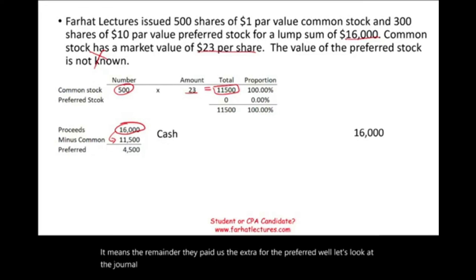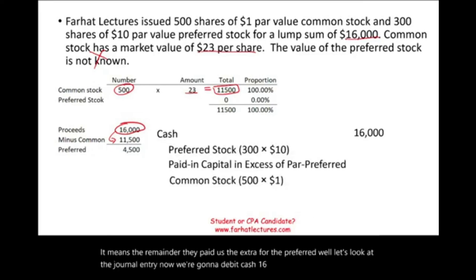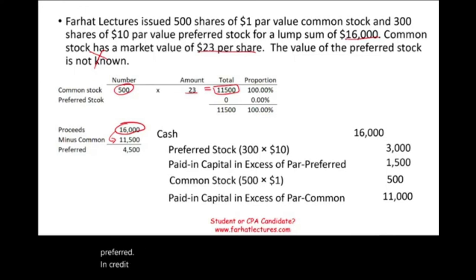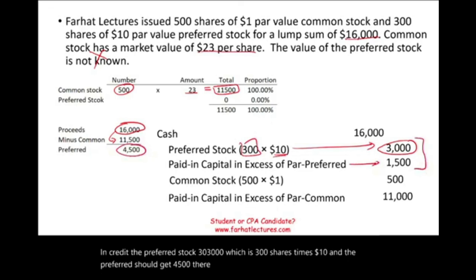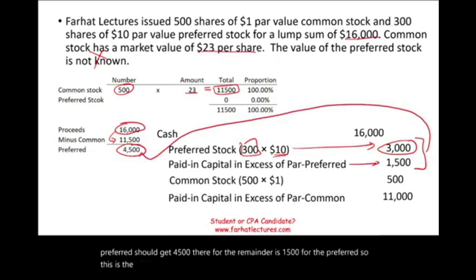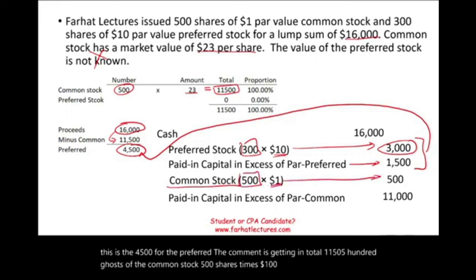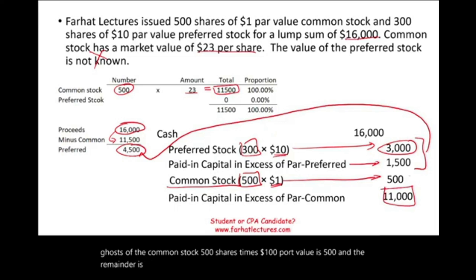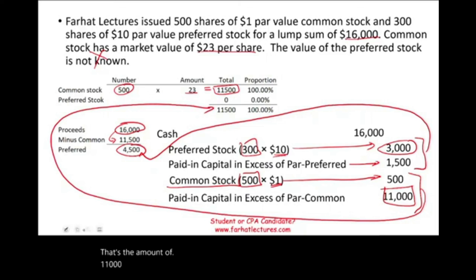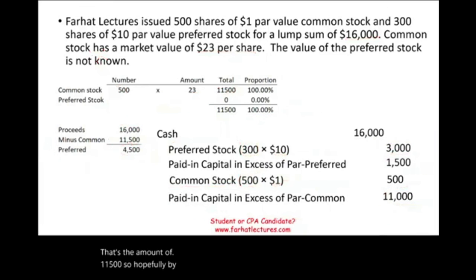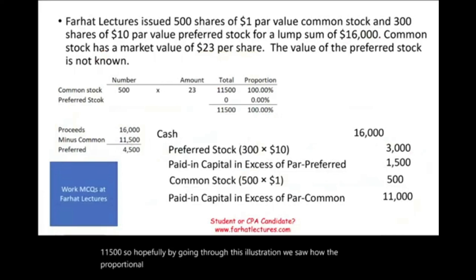Let's look at the journal entry. We debit cash $16,000. We credit preferred stock for 300 shares times $10 par value, which is $3,000. The preferred gets $4,500 in total, so the remainder — $1,500 — is additional paid-in capital for preferred. The common stock gets $11,500 in total: $500 goes to common stock (500 shares times $1 par value), and the remaining $11,000 goes to additional paid-in capital. In total, that's $11,500 allocated to common. This illustrates how the proportional versus the incremental method works.